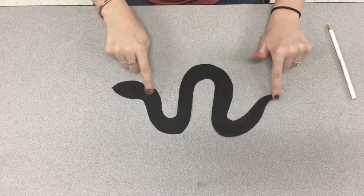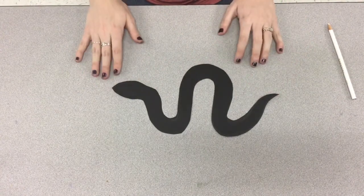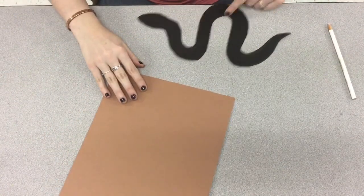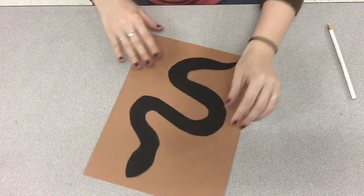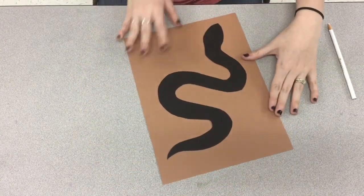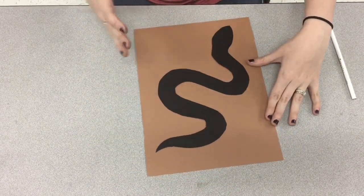So the side that I have the pencil lines on is where I'm going to put the glue. So I'm going to put glue on this side and lay it down at a diagonal line so that it looks like it's crawling off the page.